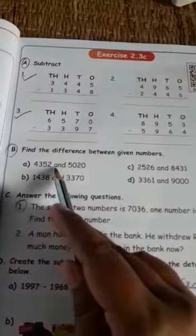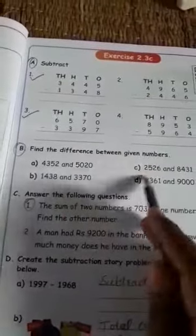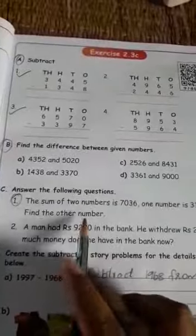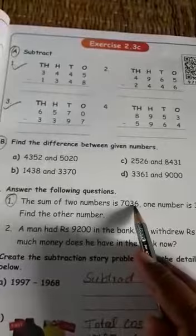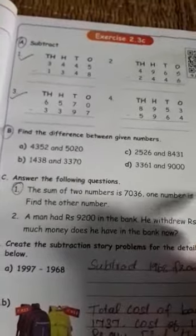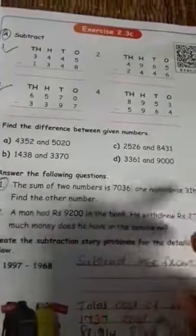First sum is already solved in your maths note, FAQ copy. And rest of the 3 sums you should write in your maths note. And then this is a word problem. The sum of 2 numbers is 7,036 and 1 number is given 3,168, find the other number. We have to subtract this number to this number.